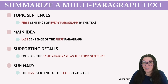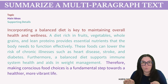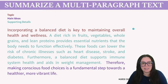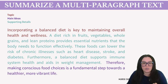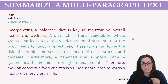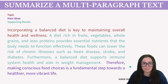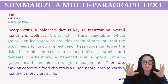Let's take a look at some practice questions to tie this all together. I've highlighted the topic sentence, main idea, and supporting details within the paragraph. In red at the top we have our topic sentence: 'Incorporating a well-balanced diet is key to maintaining overall health and wellness.' In blue we have our supporting details — everything that builds up that topic sentence, including how a diet rich in fruits, vegetables, whole grains, and lean proteins provides essential nutrients, lowers risk of chronic illness, and supports immune system health. And in purple at the bottom is our main idea: 'Therefore, making conscious food choices is a fundamental step towards a healthier, more vibrant life.' This is how you'll break it down on the TEAS.